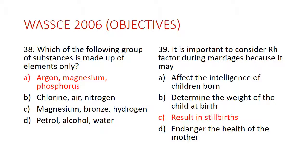Question 39: It is important to consider the Rhesus (RH) factor during marriages because it may result in stillbirth — the baby dying during pregnancy or at birth. So outside of sickle cell disease, there is also the need to consider the Rhesus factor when choosing a spouse, because it could result in the child dying during birth.